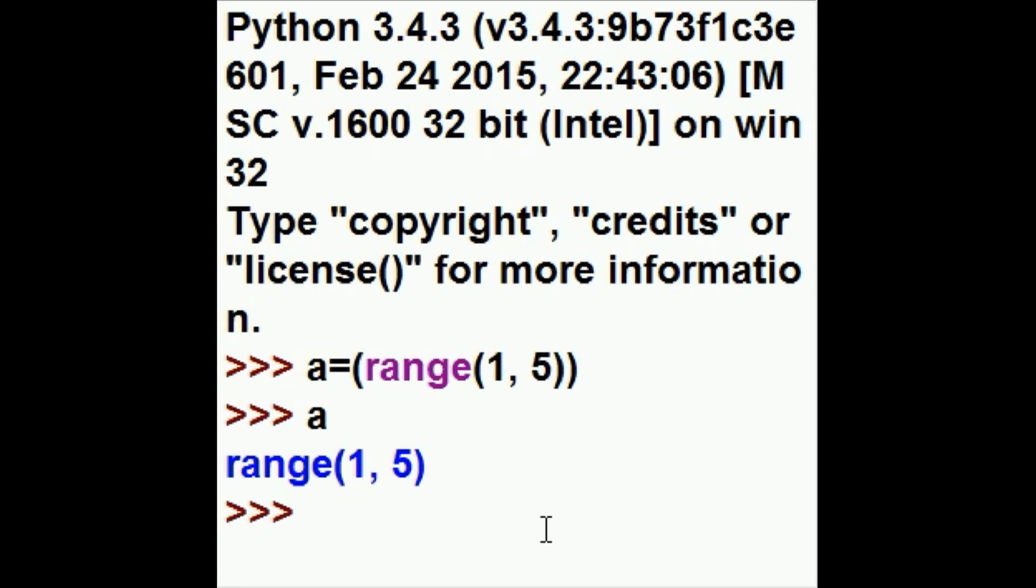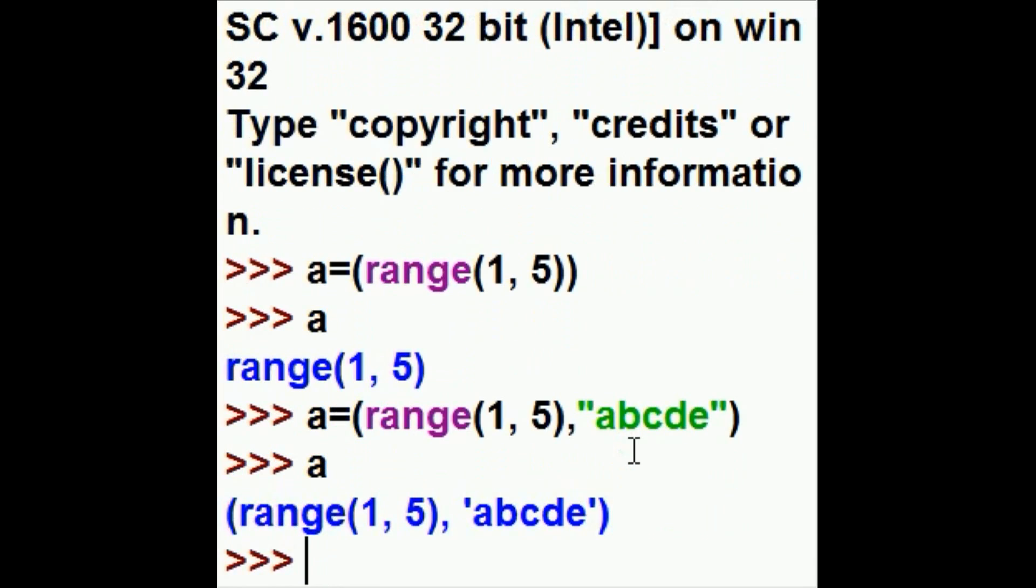I want to do that again, but this time I want to add something else on to it. I want to key in a comma and then A, B, C, D, E. That's nice. A nice string. Let's see what happens when I do that. I key in A and I hit A, B, C, D, E and range 1 comma 5.